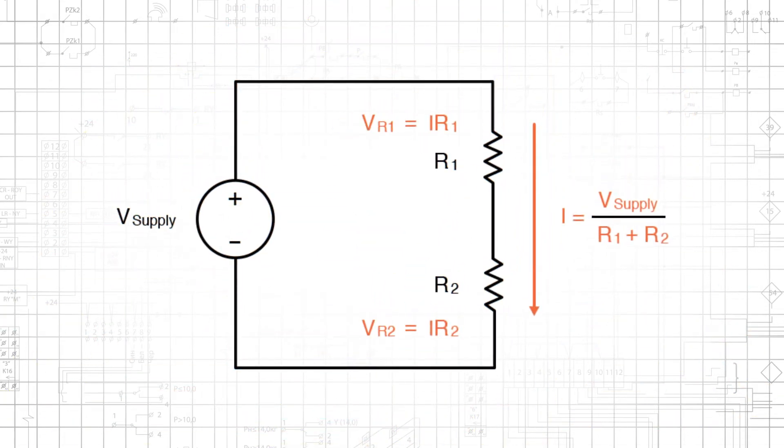This diagram shows how Ohm's law can be used to determine first, the total current in the circuit, and second, the voltage dropped across each resistor.